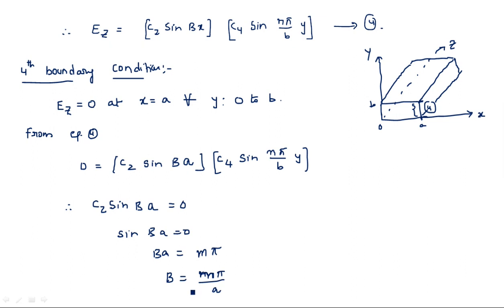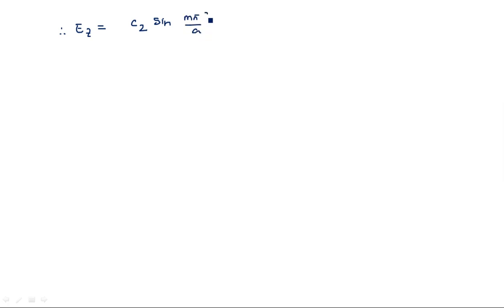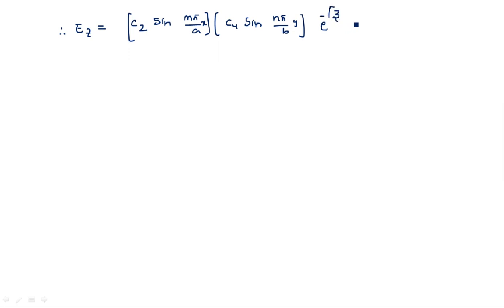Substituting this B value back into the equation, Ez is obtained as C2·sin(mπ/a · x) · C4·sin(nπ/b · y). Along with these, I am also introducing two more terms: e^(−γz) and e^(jωt).